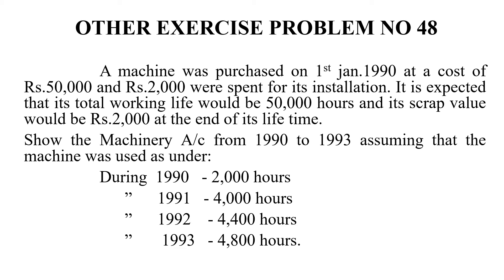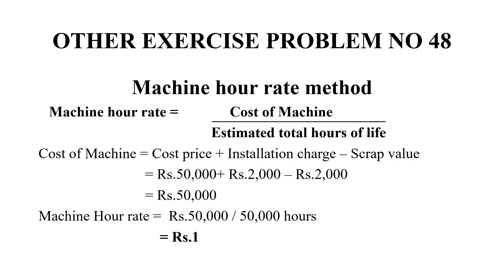In the machine hour rate method, we apply the formula: cost of machine divided by estimated total hours of life. Cost of machine = cost price + installation charges − scrap value = 50,000 + 2,000 − 2,000 = Rs. 50,000. So the machine hour rate = 50,000 ÷ 50,000 hours = Re. 1 per hour.